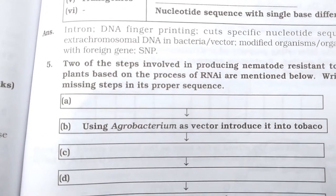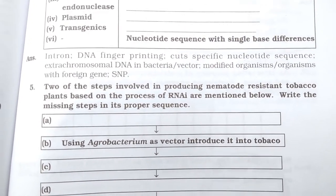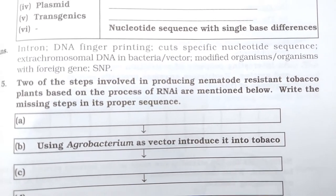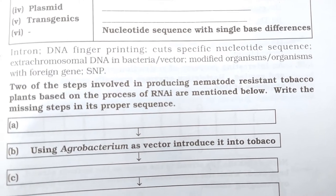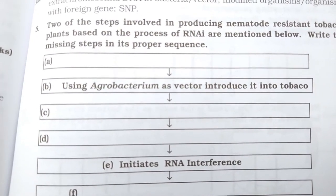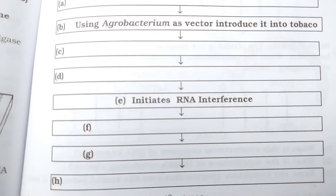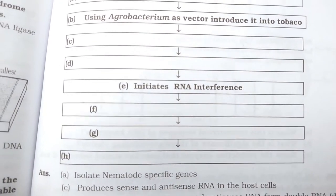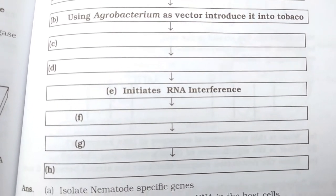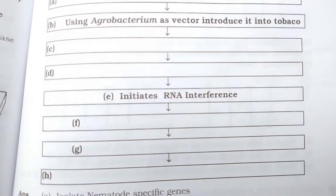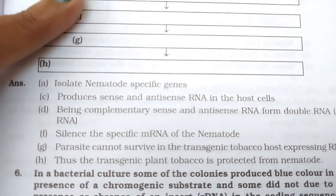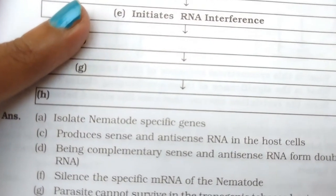Two of the steps involved in producing nematode-resistant tobacco plants, based on the process of RNAi — RNA interference — are mentioned. Write the missing steps in their proper sequence. The steps A, B, C through H are shown, and the answer is focused on screen for you to study.